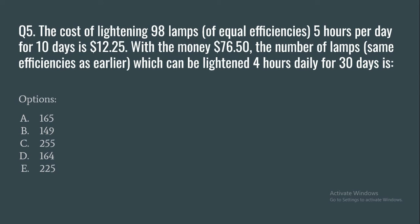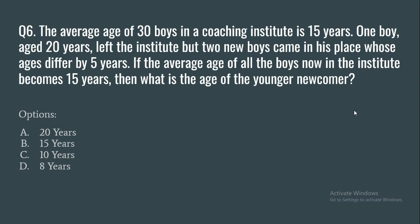Question 5: The cost of lighting 98 lamps of equal efficiency for 5 hours per day for 10 days is $12.25. With $76.50, the number of lamps of the same efficiency that can be lit for 4 hours daily for 30 days is: 165, 149, 255, 164, or 225.